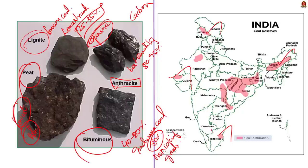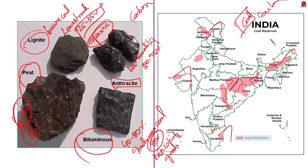Peat coal is the lowest grade coal — it has a lot of moisture and impurities, so when burned it leaves a lot of ash behind. In India, peat is found in the Nilgiri Hills and the Jhelum Valley in Jammu and Kashmir. In this news article we saw that coal is a black or brownish-black sedimentary rock composed mostly of carbon and hydrocarbon, and we saw the types of coal.